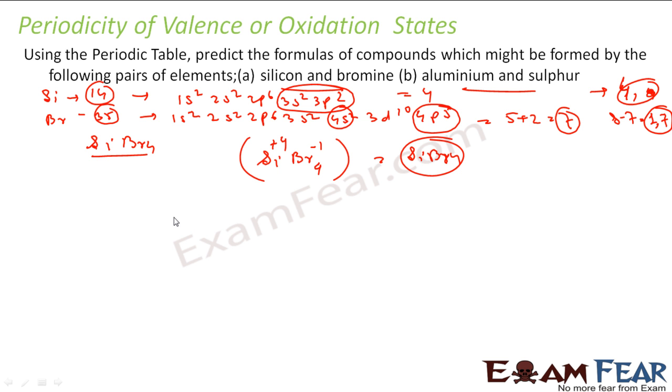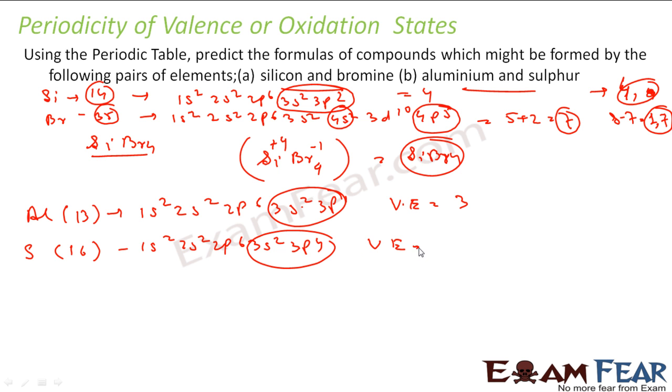Let us take aluminum and sulfur. Aluminum is atomic number 13. Electronic configuration is 1s2, 2s2, 2p6, 3s2, 3p1. So valence electron count is 2 plus 1, that's 3. Let's talk about sulfur, 16. This becomes 1s2, 2s2, 2p6, 3s2, 3p4. So valence electron is 4 plus 2, that's 6. So valence will be 8 minus 6, that is 2.